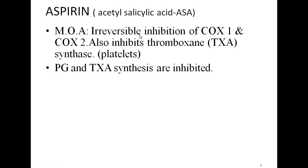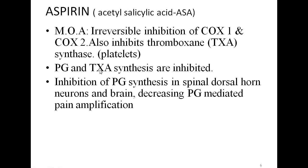Because of this irreversible inhibition of COX-1, COX-2, and thromboxane synthase, the synthesis of prostaglandins and thromboxane is inhibited. There is also inhibition of prostaglandin synthesis in the spinal dorsal horn neurons and the brain. Prostaglandins sensitize nociceptors to nociceptive substances at the site of inflammation, and also amplify pain in the dorsal neurons and the brain. So aspirin, by inhibiting COX-1 and COX-2, decreases pain amplification mediated by prostaglandins.